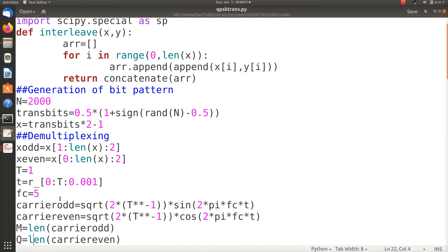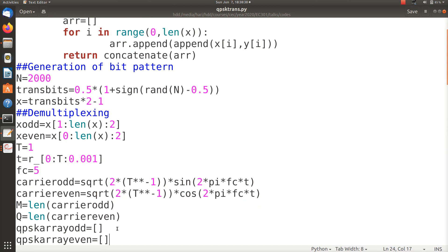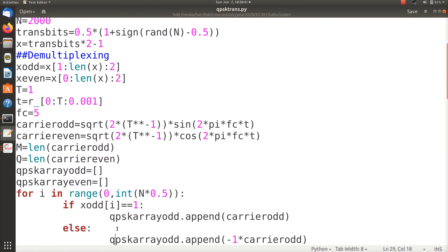Now I have to make two carriers, that is phi1(t) and phi2(t). So I generate - let us take that the bit duration is unity. I take it as unity, so I generate a vector on t with the increments of 0.001 and I take 5 times - this is the frequency of the carrier. So the odd carrier is sqrt(2/T)*sin(2*pi*fc*t) and the even carrier is sqrt(2/T)*cos(2*pi*fc*t). Then I initiate two blank arrays for the QPSK signal, for the odd part and the even part.